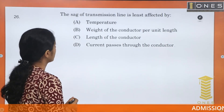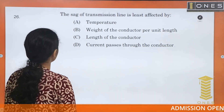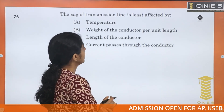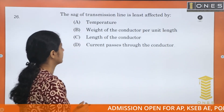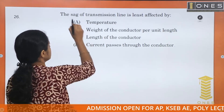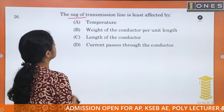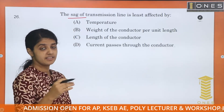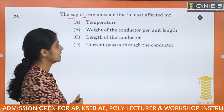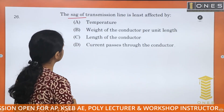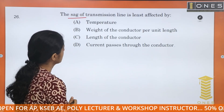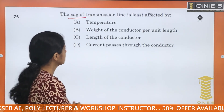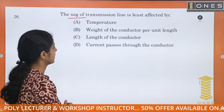The SAG of a transmission line is least affected by temperature, weight of conductor per unit length, and length of conductor.